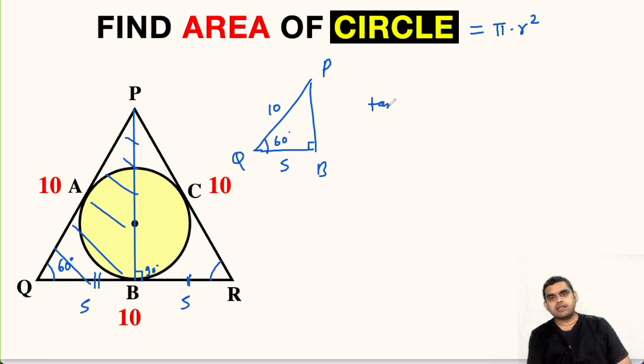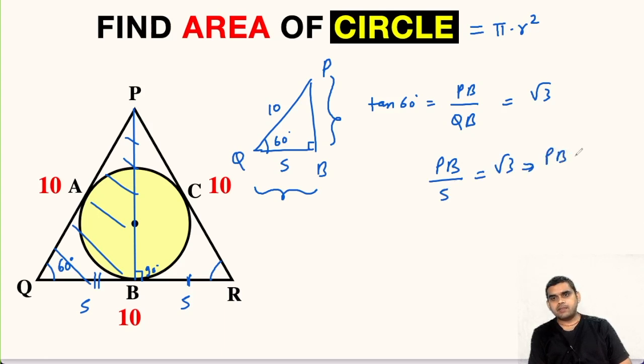We know that tan 60 degrees is equal to PB upon QB. So tan 60 is root 3. PB is unknown. So PB upon QB which is 5 equals root 3. So from here we get PB equals 5 root 3. So we have found the value of PB.